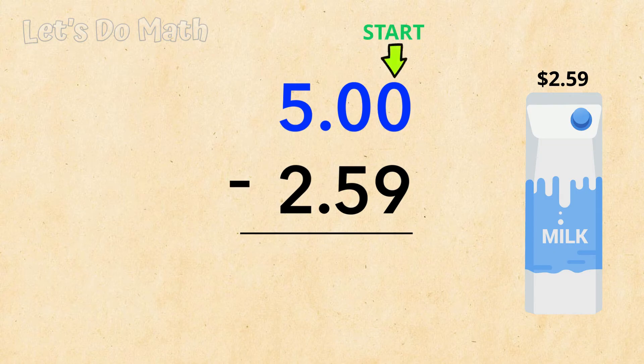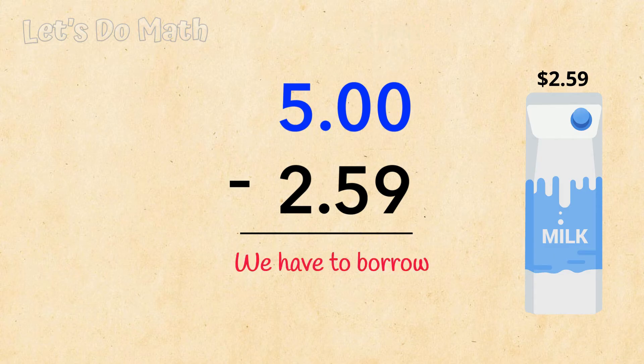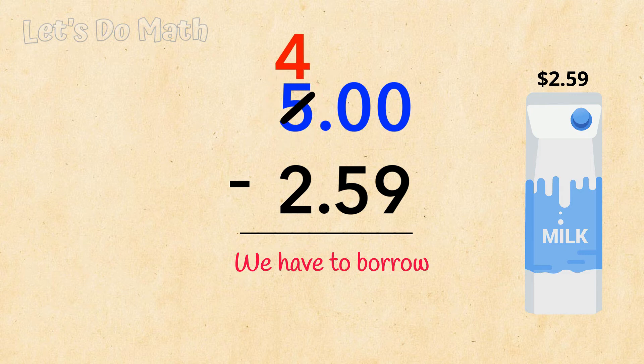We start here with 0 minus 9. We have to borrow, but in the next column there's another 0. So we go here and borrow from the 5, which now becomes a 4.